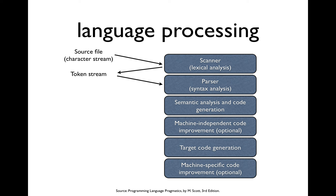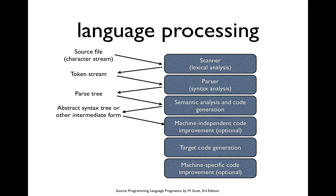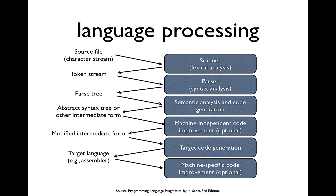We take that token stream and typically feed it into a parser, which does syntactical analysis and produces a parse tree. That parse tree can then be fed into another processor doing semantic analysis and code generation, producing an abstract syntax tree or some other intermediate form. This can be processed by a module doing machine-independent code improvement — this phase is optional. We may skip it and go right to target code generation, which ultimately produces a file of the target language. We might also do machine-specific code improvement. That's the entire compiler stack of a typical compiler.